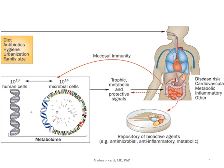There are many different factors, but I want you to pay attention to diet. Your diet will determine what kind of bacteria you have on your body. If you take antibiotics, of course it's going to kill many bacteria. Your hygiene, urbanization, family size and so forth also play a role. All these bacteria basically send a signal to your immune system, and then the immune system responds.